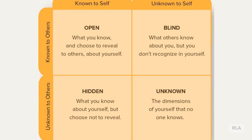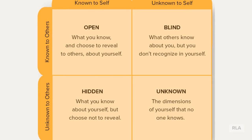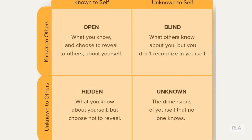The first area is the open self — the information that we know about ourselves that we've shared with the other person in the relationship. The second pane is the hidden area — information we know about ourselves but haven't shared with our listener. The third pane is information known by the other person that we haven't figured out about ourselves, such as being impatient or rude without realizing it. The final pane is information that neither of us know — not discovered by yourself nor by your listener.